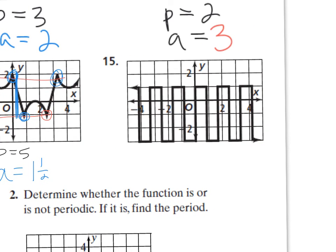For this one, the period — it's repeating itself. Here's a spot that corresponds with this spot. The period is about one and two-thirds. It's not exact; you have to approximate. The amplitude — look at the height — it's going from negative one to three, so the height is four, and half of that is two.